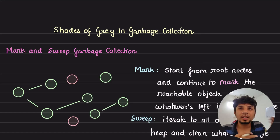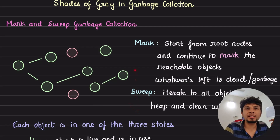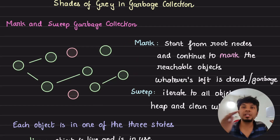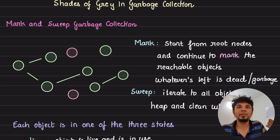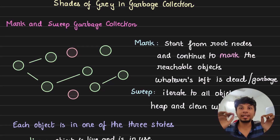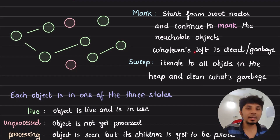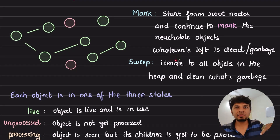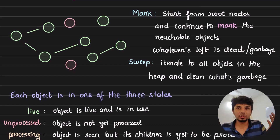Now back to the video. Let's recap the mark and sweep garbage collection algorithm. The input to our garbage collector is an object reference graph in which we know which object refers to which other object. Mark and sweep splits into two phases. First is the mark phase, which starts from the root node and sees which nodes are reachable from it — those are live. Everything else is garbage. Then comes the sweep phase, in which all unmarked objects are cleaned up.